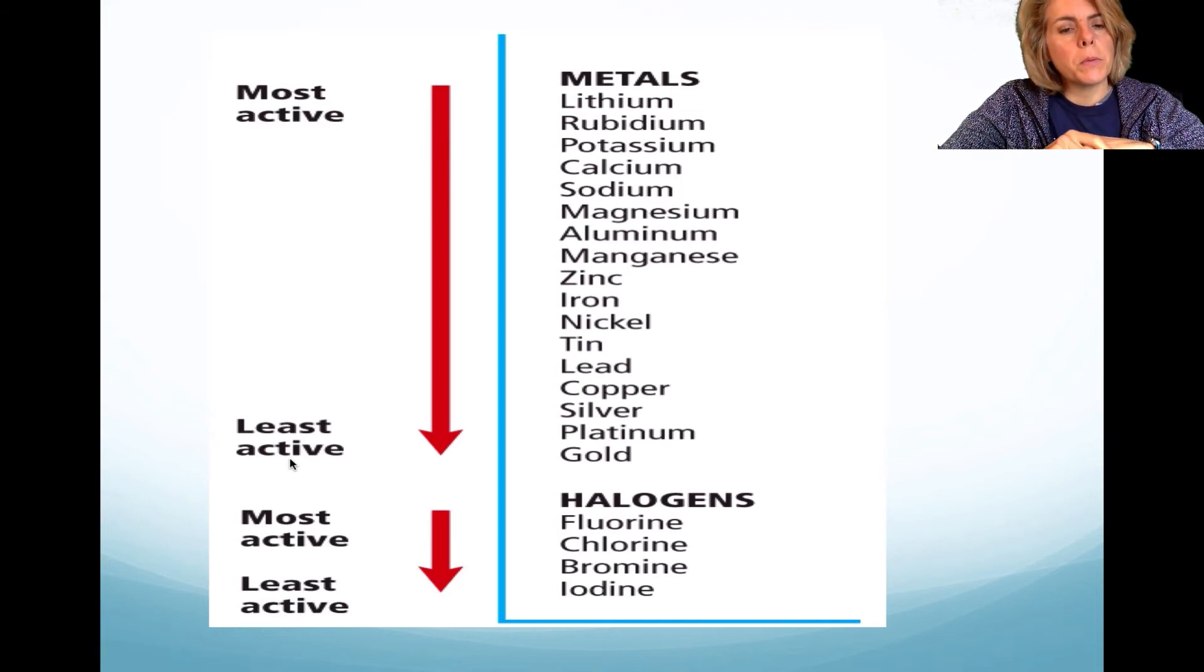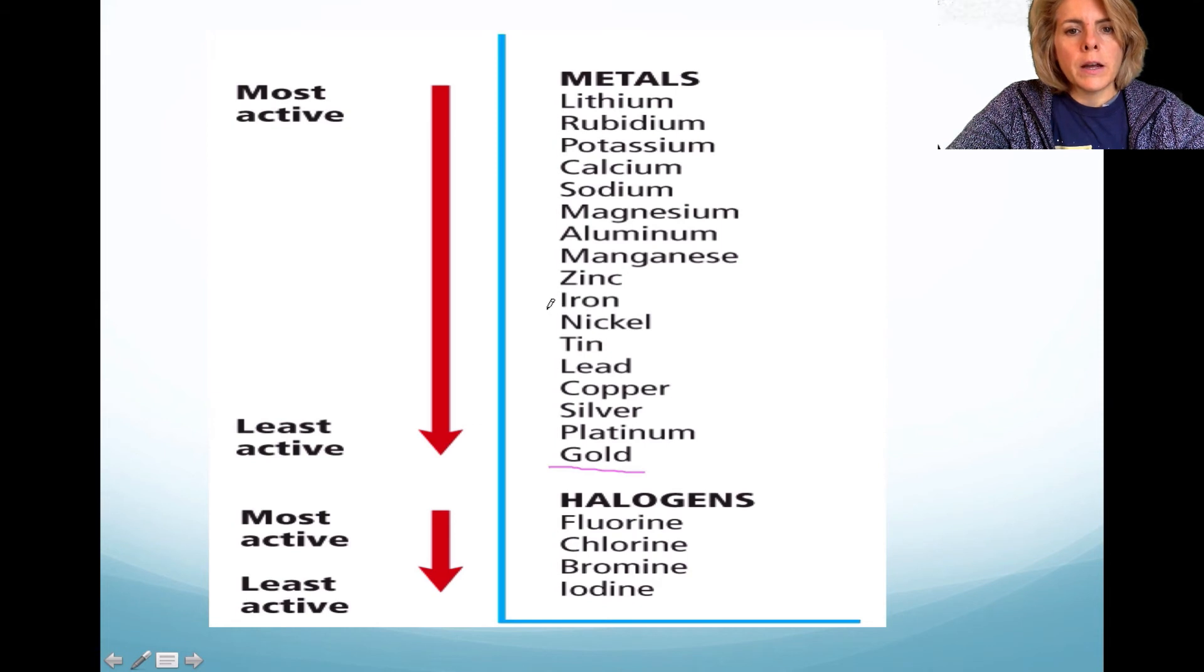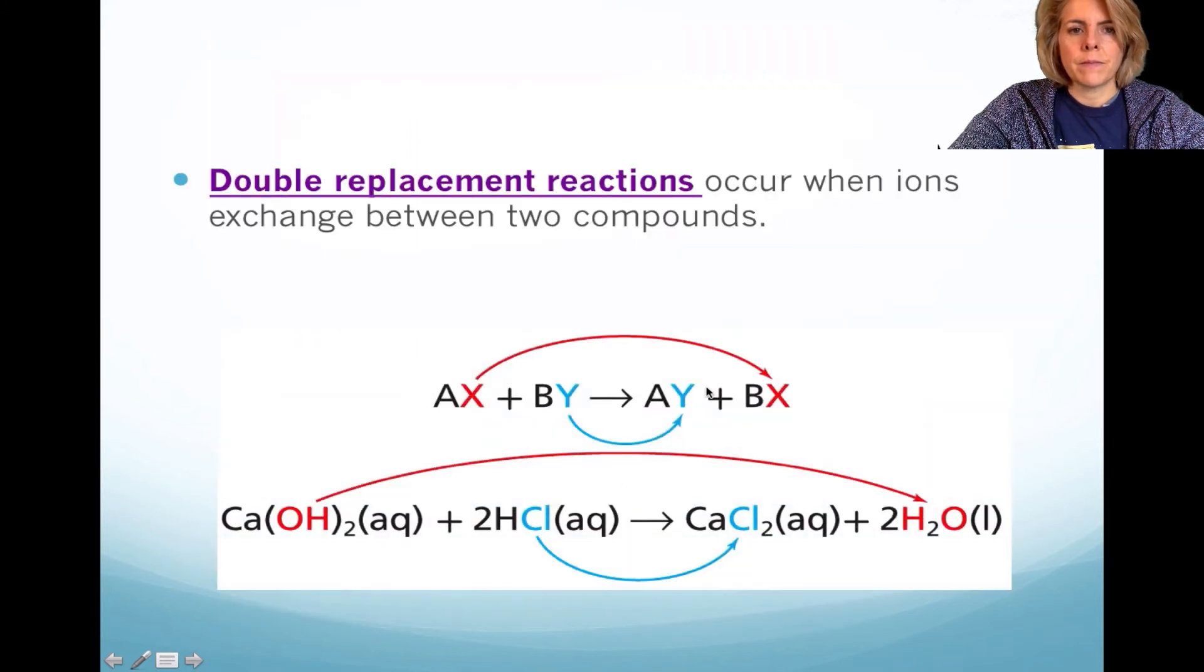This is actually a chart that you're going to get on the back of your periodic table. I always give this to students just so they know what to look for. Notice that anything that's towards the bottom of the list is not going to replace another metal. So gold, obviously, is not going to replace anything above it. Iron will not replace anything above it. Iron, however, will replace anything below it. So if I wanted to replace iron with copper, I could. Lithium will replace anything below it. So lithium is probably the most active out of all the metals. Now, you could apply that to halogens. So fluorine is the most active out of all the metals, I'm sorry, all of the halogens. It will replace any halogen that's below it. However, iodine is the least active. It will not replace anything above it.